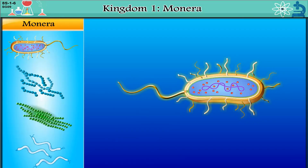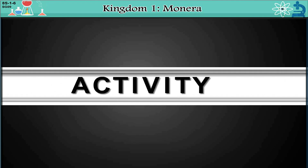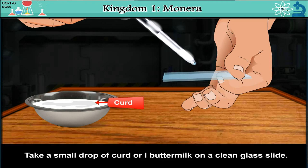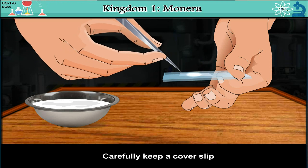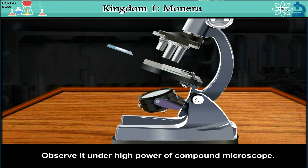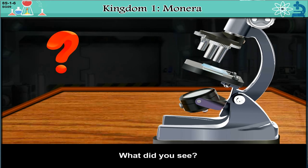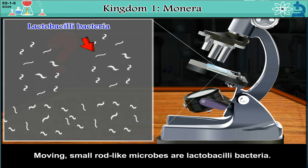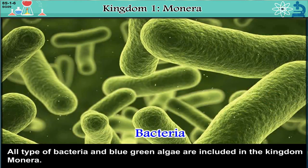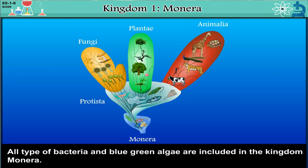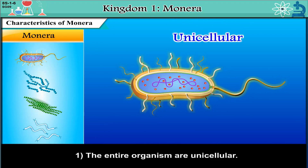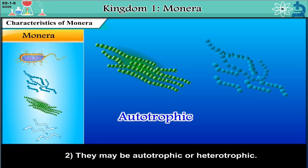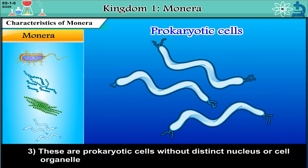Kingdom 1 — Monera. Activity: Take a small drop of curd or buttermilk on a clean glass slide, dilute it with a little water, carefully place a cover slip, and observe it under high power of a compound microscope. The moving small rod-like microbes you see are Lactobacilli bacteria. All types of bacteria and blue-green algae are included in Kingdom Monera. Characteristics: 1. All organisms are unicellular. 2. They may be autotrophic or heterotrophic. 3. These are prokaryotic cells without a distinct nucleus or cell organelles.